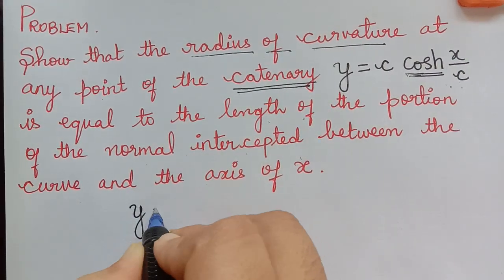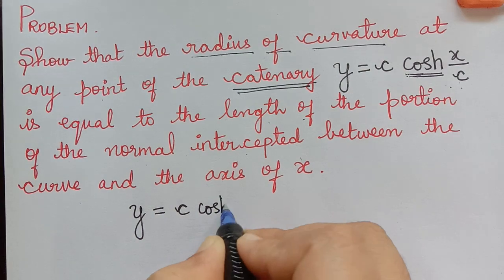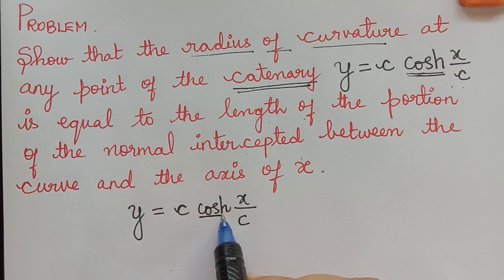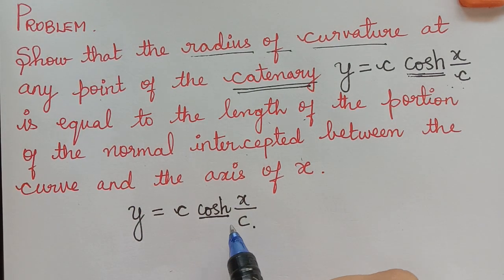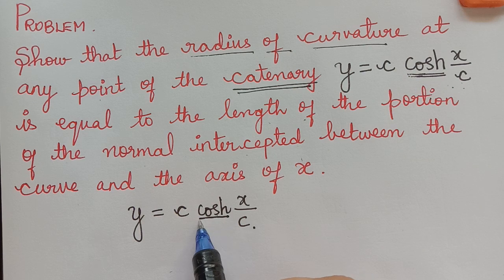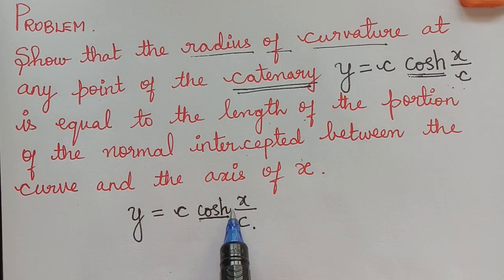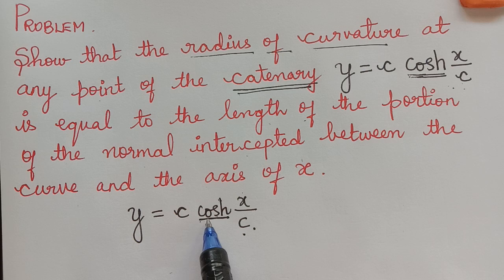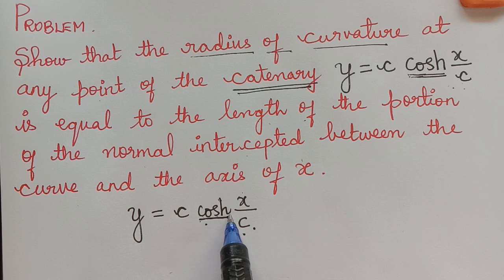The given curve is y = c·cosh(x/c). Very carefully, students, you should remember that cosh is a function and x/c is the angle. By mistake, some students write cos separately and h along with the angle x/c, writing it as cos(hx/c), which is a mistake. cosh is a hyperbolic trigonometric function and must be written together.